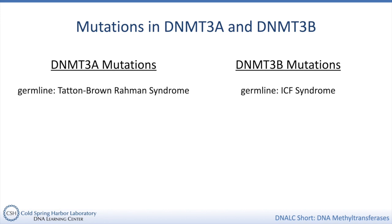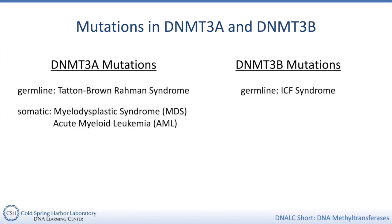Somatic mutations in DNMT3A have been identified in myelodysplastic syndrome (MDS) and some forms of acute myeloid leukemia. In these neoplasms, there are many regions of hypomethylation as well as regions of hypermethylation. The differences between these syndromes and cancers reflect how the loss of one or the other de novo DNA methyltransferase leads to loss of methylation in particular regions of DNA. These two enzymes act differently.